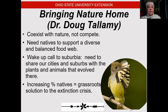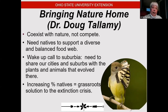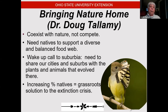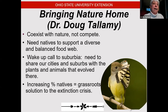Late last year he came out with another book called Nature's Best Hope, and quite frankly I think that's a better book. I'm giving you all a homework assignment — I want you to read both books, and I would encourage you to read the second one first. We're going to talk about what he proposed in the second book, which is to set up a national homegrown park.